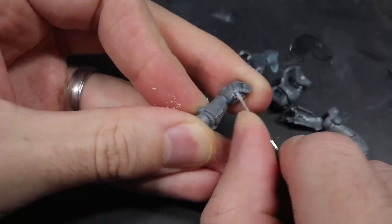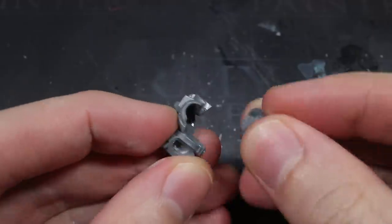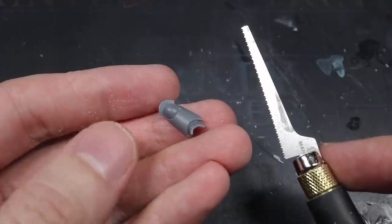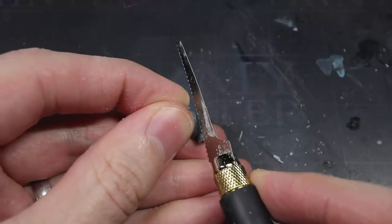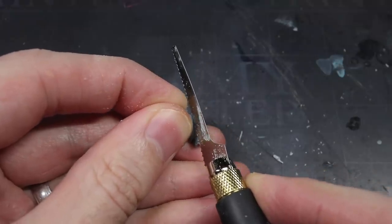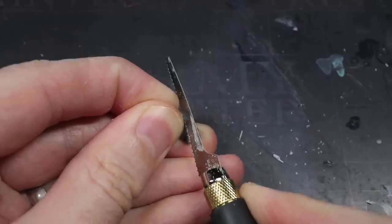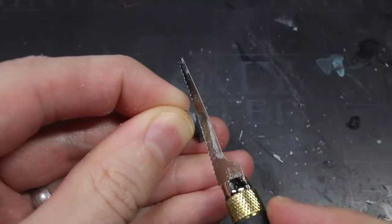With this done I could begin assembling the torso and legs, however for the time being I decided to keep the lower leg armour separate. Now we don't have too much information about the Cruel Blades, beyond their colour scheme, chapter badge and a single paragraph of information. So creating a theme for these new successor chapters often involves embellishing certain details and reading between the lines a little bit.